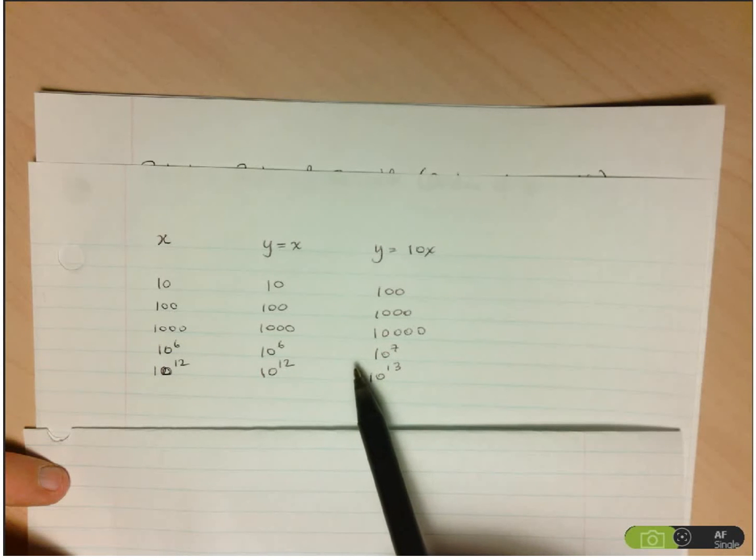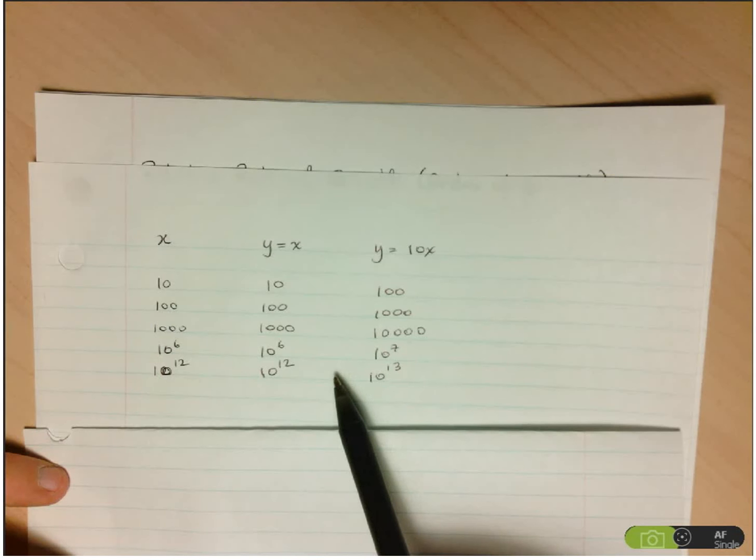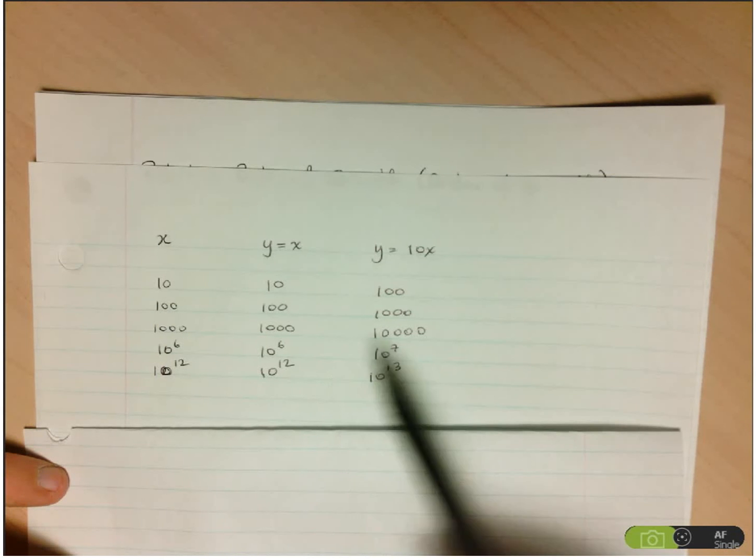And when we're talking about orders of growth or functions that have different orders of growth, we're talking about functions where the value of the function with a lower order of growth becomes eventually insignificant with respect to the second function.